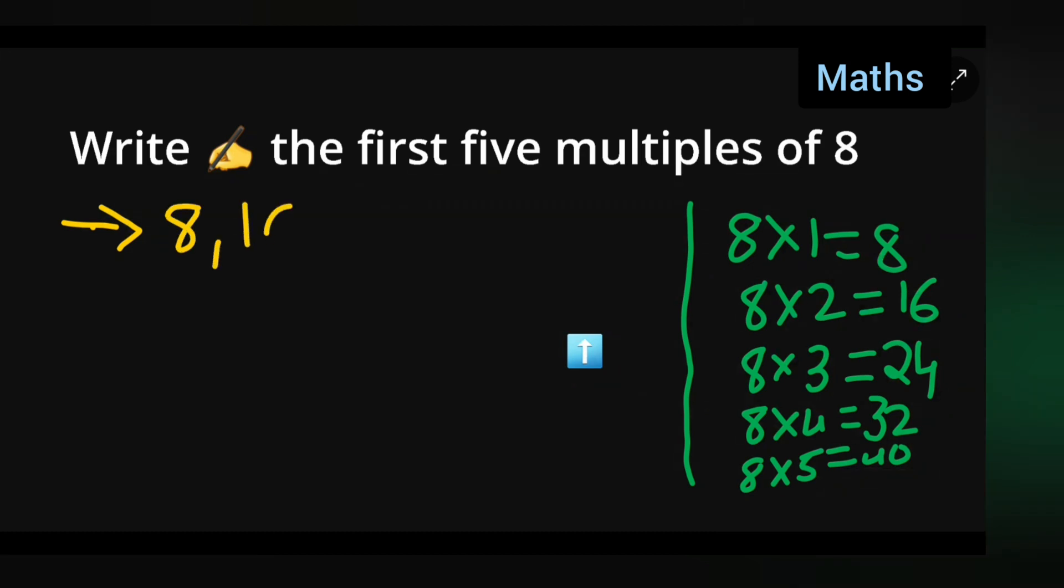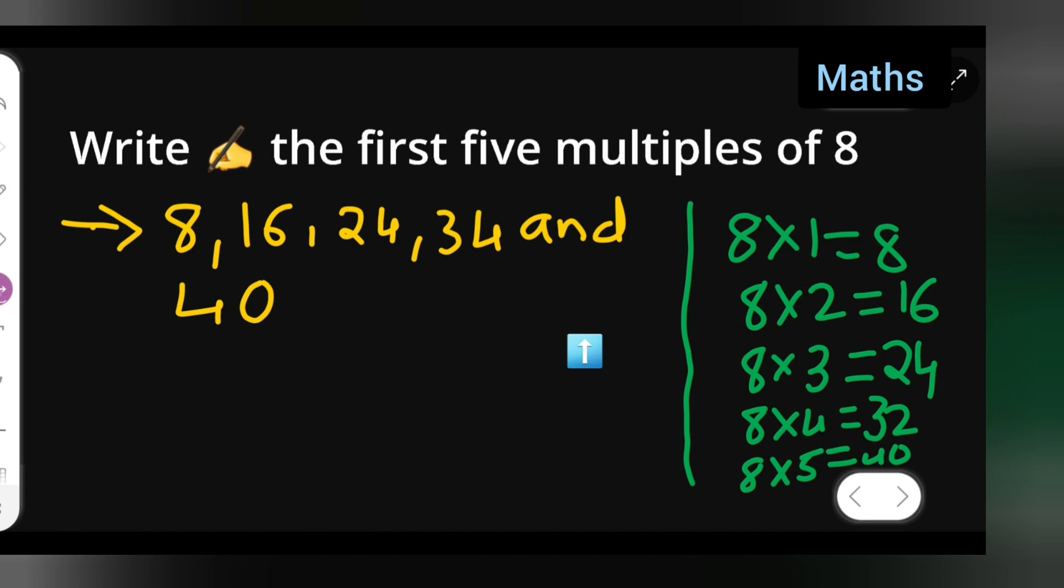8, 16, 24, 34, and 40. So these are the first five multiples of 8.